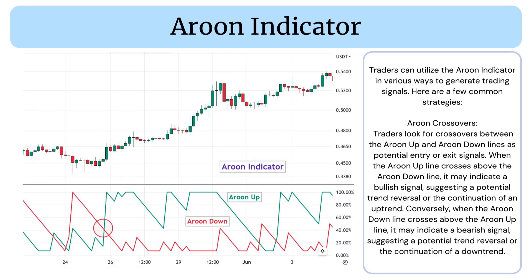Traders can utilize the Aroon Indicator in various ways to generate trading signals. Here are a few common strategies. Aroon Crossovers: Traders look for crossovers between the Aroon Up and Aroon Down lines as potential entry or exit signals. When the Aroon Up line crosses above the Aroon Down line, it may indicate a bullish signal, suggesting a potential trend reversal or the continuation of an uptrend. Conversely, when the Aroon Down line crosses above the Aroon Up line, it may indicate a bearish signal, suggesting a potential trend reversal or the continuation of a downtrend.